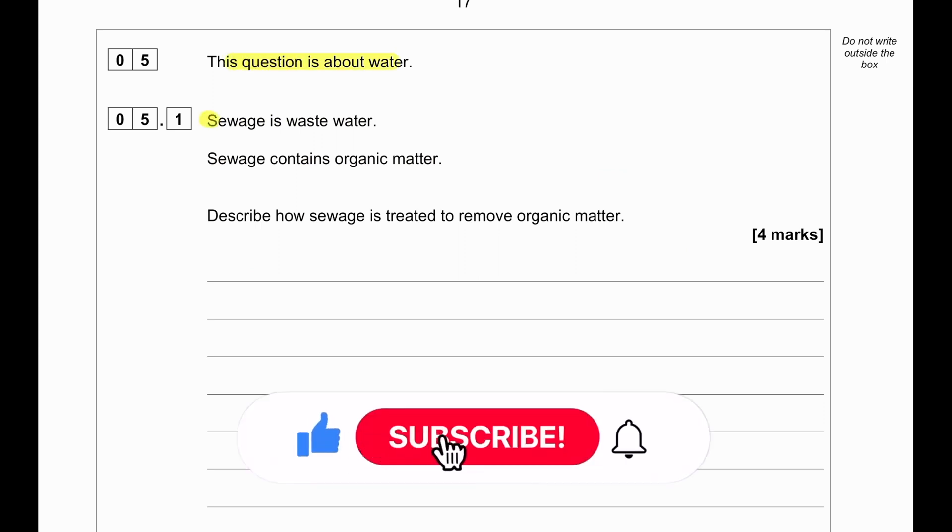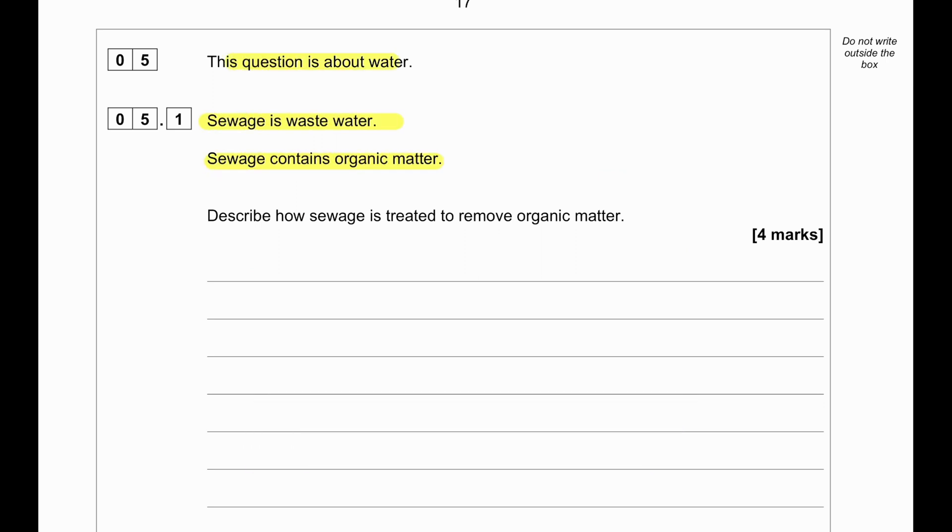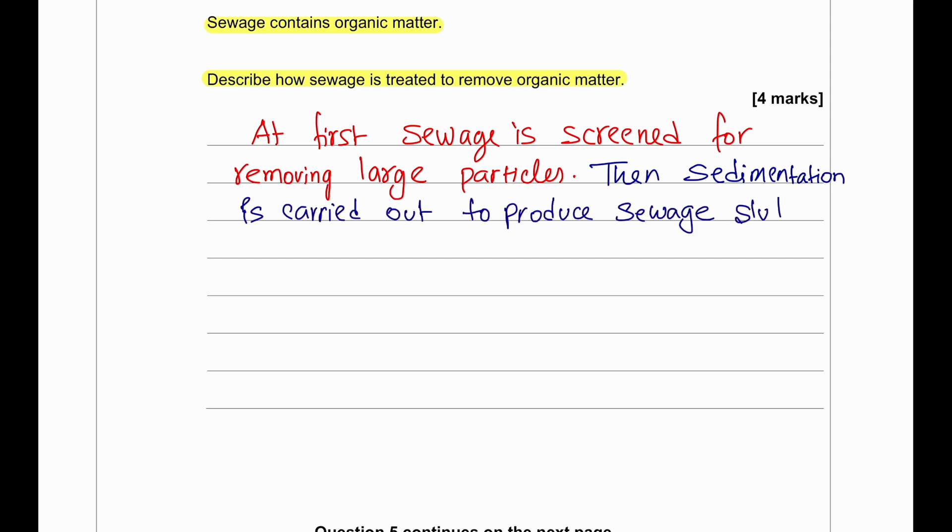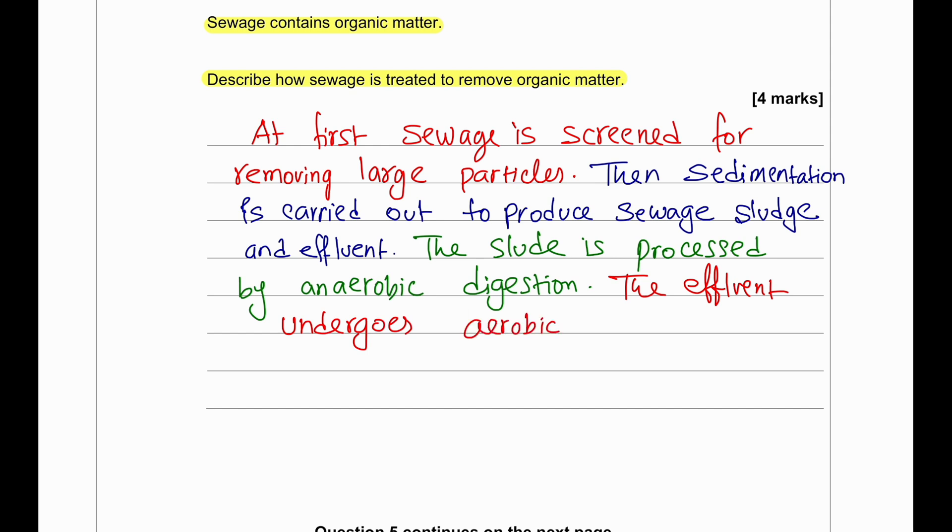This question is about water. Sewage is wastewater. Sewage contains organic matter. Describe how sewage is treated to remove organic matter. First of all, the sewage is screened so that large particles which are suspended in the water can be removed. Then the sewage water is allowed to undergo a process called sedimentation to produce the sewage sludge and effluent. Then anaerobic digestion of the solid sewage sludge is done to produce methane gas and to break off all the biological molecules. And then aerobic biological treatment of the liquid effluent is done by using bacteria and certain microbial organisms that are beneficial.